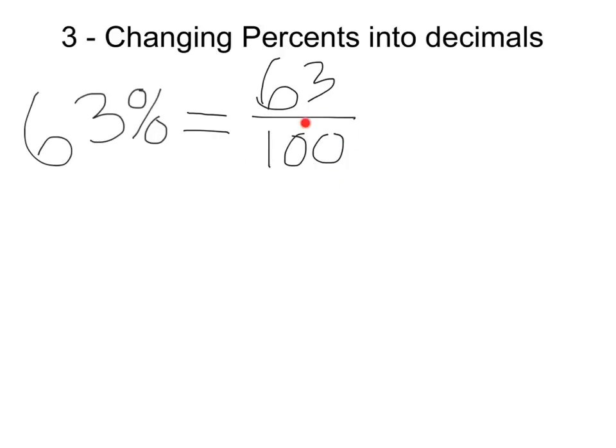So we're saying that we have 63 hundredths, which means we just have to write it in a decimal form as 63 in the hundredths position, remembering the first we have as the tenths, and then the hundredths position.